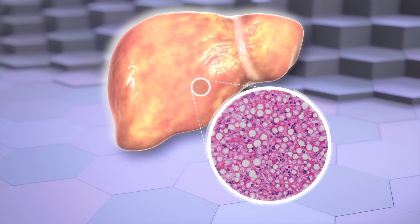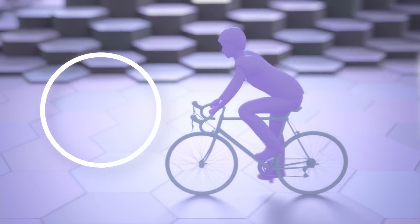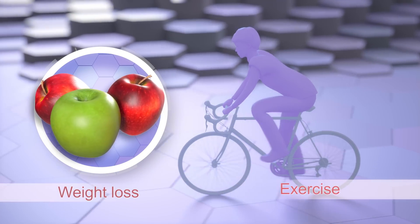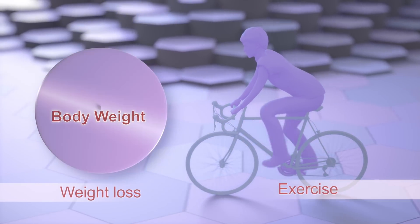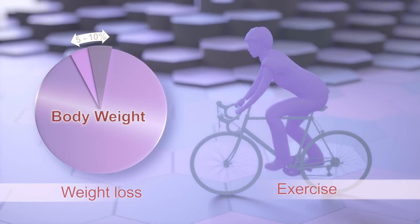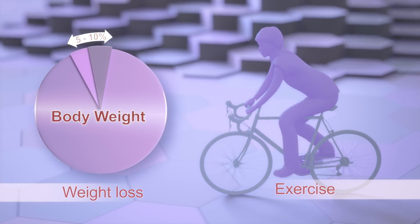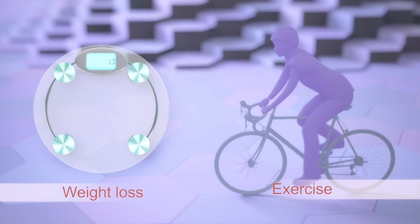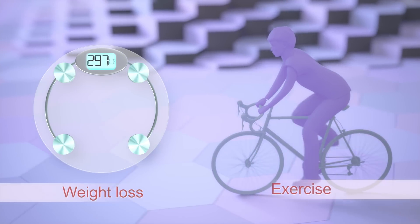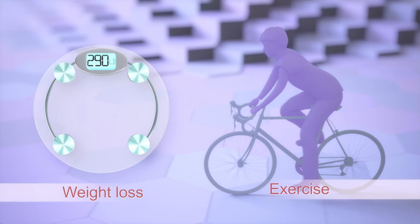Fatty liver may be reversed by adopting a healthy lifestyle, including weight loss and exercise. The goal for weight loss should be approximately 5 to 10 percent of total body weight — for example, 15 to 30 pounds for a person who weighs 300 pounds.